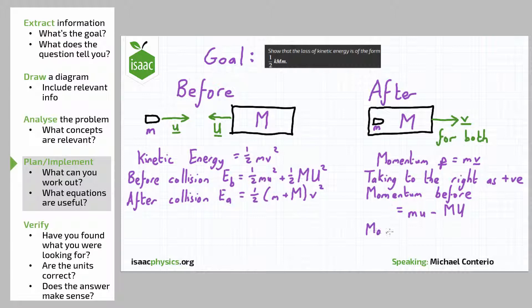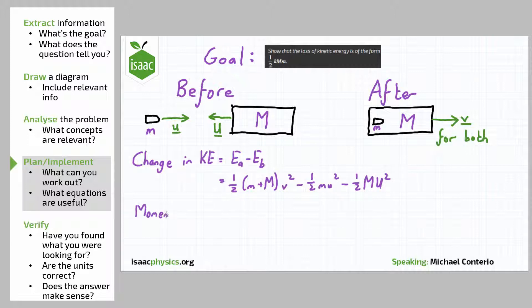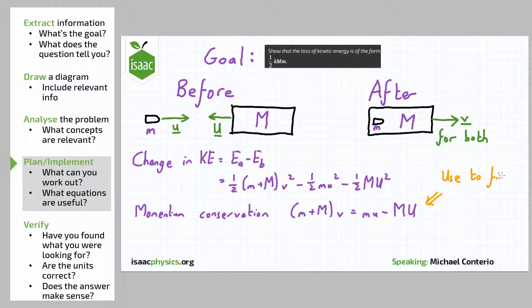The minus sign is because the velocity capital U for the wooden block is acting to the left. The momentum after the collision is given by (little m plus big M) all multiplied by v, because the velocity v is acting to the right. We can use the equations for kinetic energy before and after to work out the change in kinetic energy, which is Ea minus Eb. Using conservation of momentum, we equate: (little m plus capital M) times v equals little m times little u minus capital M times capital U. We now plan to rearrange this to make v the subject and substitute it into the change in kinetic energy equation.